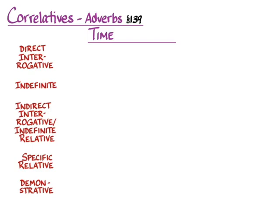Let me show you how this works with time words. We ask the question 'when' with pote. It's got its own accent and it's a question word — it's adverbial, a direct interrogative adverb, asking something about how a sentence is going on. If we want the indefinite form, we'll say pote (enclitic). We don't know what time it is; we're being nonspecific and indefinite, so it means 'sometime' or 'ever.' You've already learned that as vocabulary.